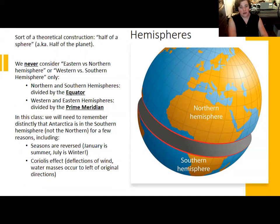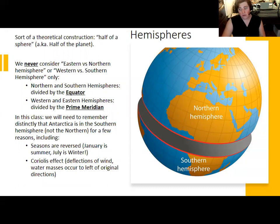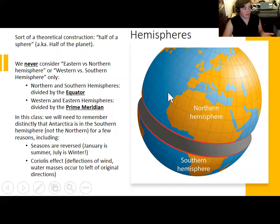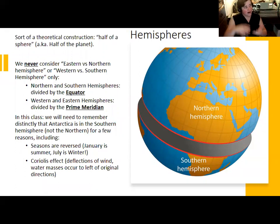The eastern and western hemispheres use the prime meridian — a line running from the North Pole through Greenwich, London, down to the South Pole — as the zero reference for longitude. The eastern hemisphere is everything east of the prime meridian; the Americas are generally referred to as the western hemisphere. Just don't mix the north/south hemisphere framework with the east/west hemisphere framework — you work with one pair or the other.